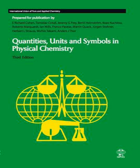The third edition of the Green Book (ISBN 978-0-85404-433-7) was first published by IUPAC in 2007. A second printing of the third edition was released in 2008, which made several minor revisions to the 2007 text. A third printing of the third edition was released in 2011; the text of the third printing is identical to that of the second printing.